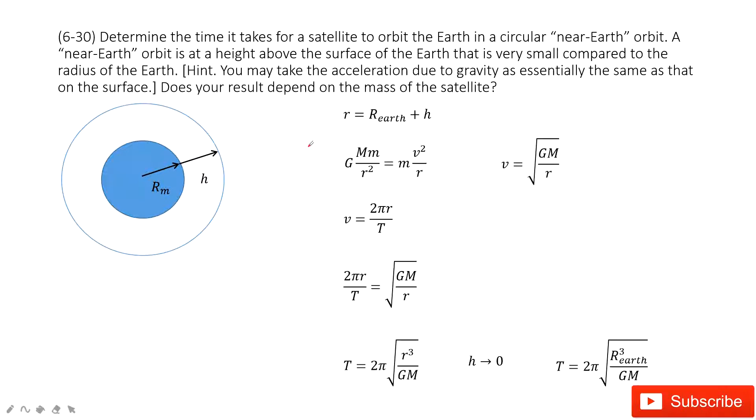Let's look at problem 30 in chapter 6. In this one, we need to determine the period for the circular near-Earth space shuttle. So let's look at this picture.